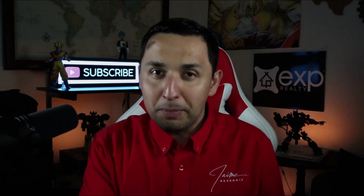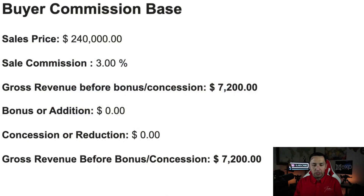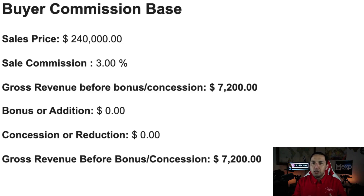So you see the commission disbursement — how to actually calculate your commission with real life numbers, so there's no guessing. Let's share the screen and assume the following: the sales price was $240,000, the sale commission was 3%, and that means the gross revenue is $7,200. That's a basic calculation that every single agent can make, no different than any other brokerage out there. This is what you can expect from the buyer side.